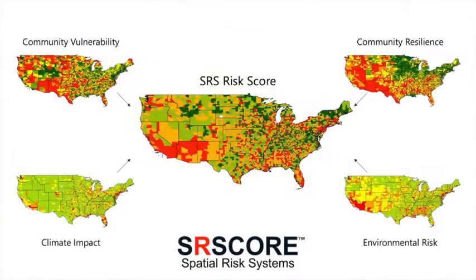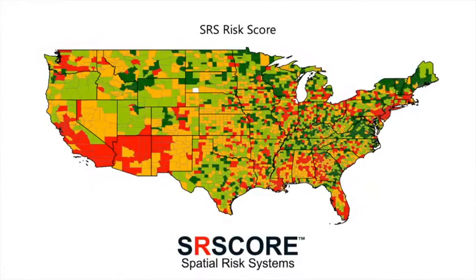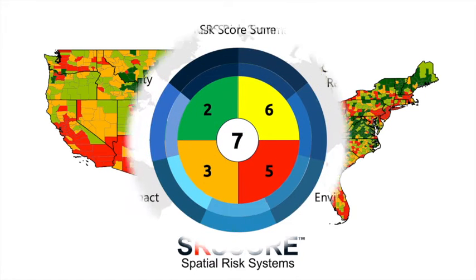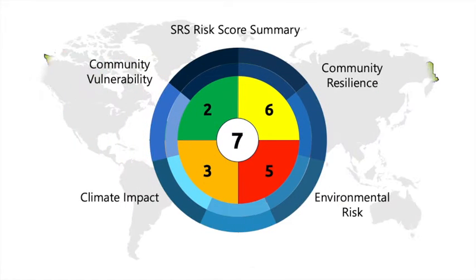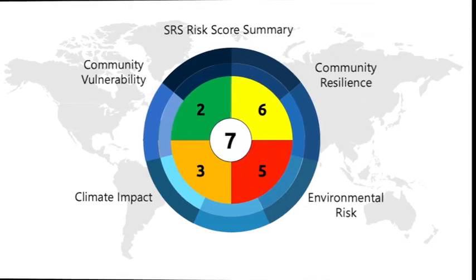These four scores are then unified into a single SRS risk score, which is represented with the core score in the center surrounded by the four component scores categorized by color.